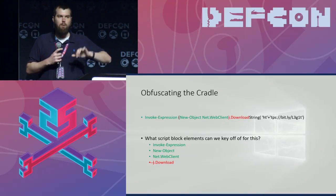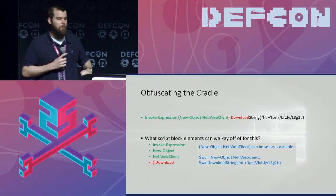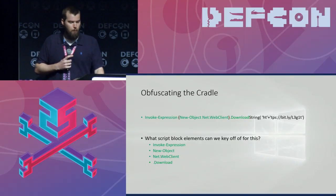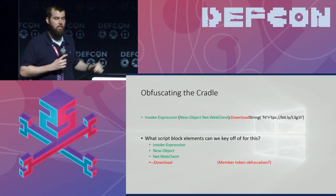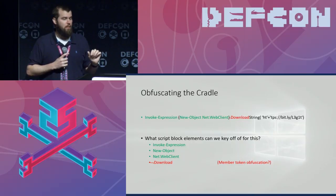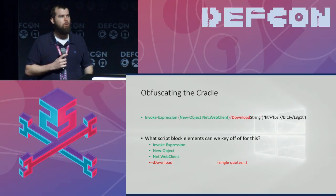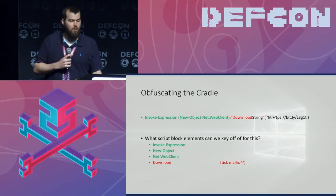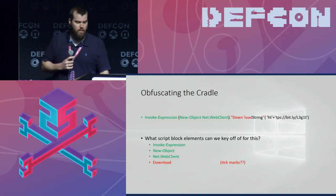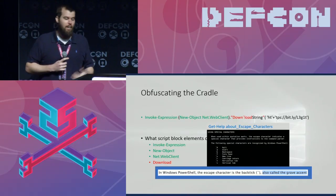Why might the dot be problematic? DownloadString is a member token — you can put single quotes, double quotes, or tick marks around it. The tick mark is the escape or grave accent character. You can place tick marks in front of any character that has no escapeable meaning — there are eight special characters like tick-zero for null, tick-n for newline. If you really want to tick-escape one of those special characters, just uppercase it and it works. These ticks are in the command line logs and persist all the way into PowerShell script block logs, though not in module logs (event ID 4303/4103).